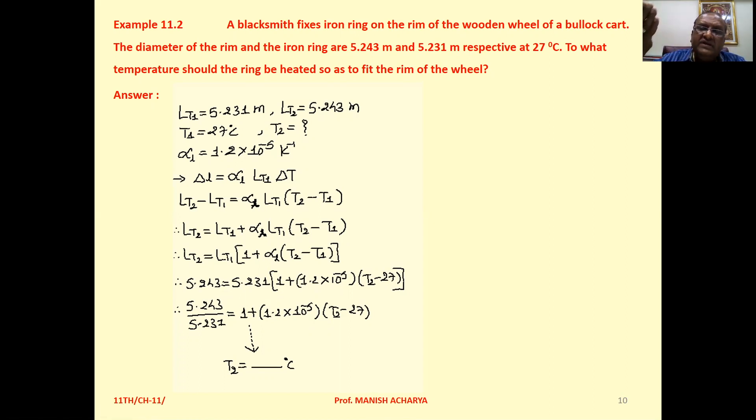And for that we have to increase the temperature of it, so linear expansion will be there. Now see, L at a temperature T1, that is the diameter at temperature T1 of the iron ring, that is 5.231 meters.